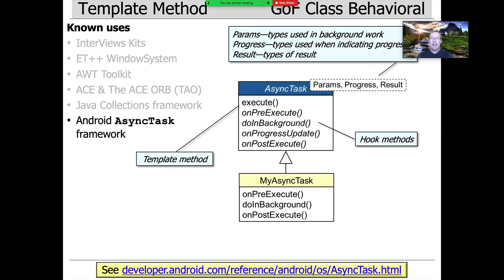One of my favorite examples of the template method pattern is Android's concurrency framework called the Android AsyncTask Framework. You have this class called AsyncTask, which has a template method called execute, and then a bunch of hook methods: on pre-execute, on progress update, on post-execute, and do in background. The 'on' methods all run in the main thread of control; the 'do' method runs in a background thread. You subclass from AsyncTask to provide custom behavior for the different hook methods — to do something before the task starts, to do something in the background in its own thread, and then to do something in the UI thread once background processing is done.